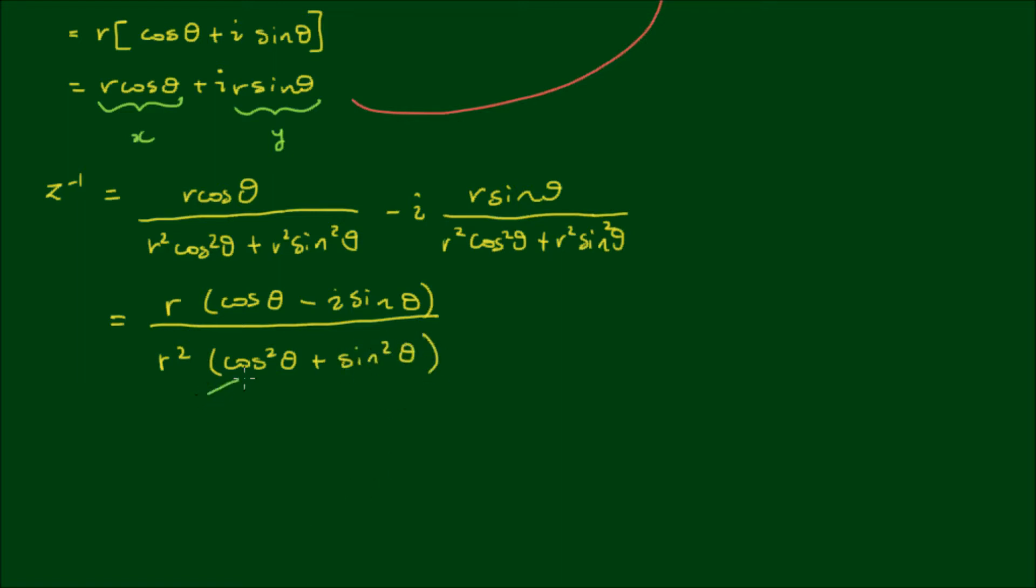And then we note that cos squared θ plus sin squared θ is equal to 1. And I can cancel out the r and the r squared.